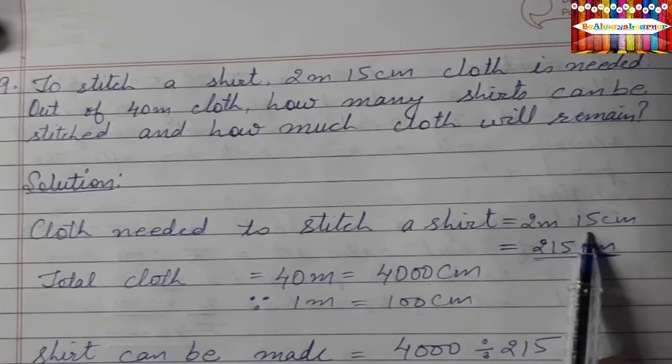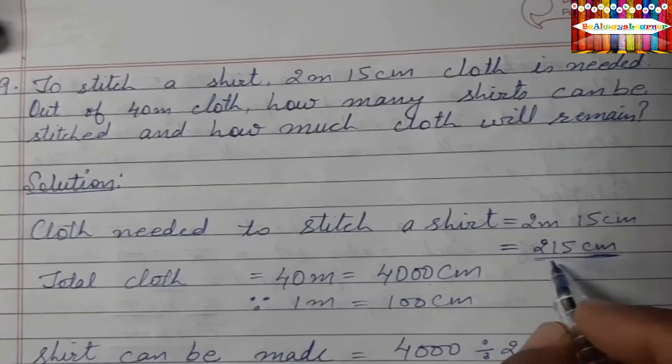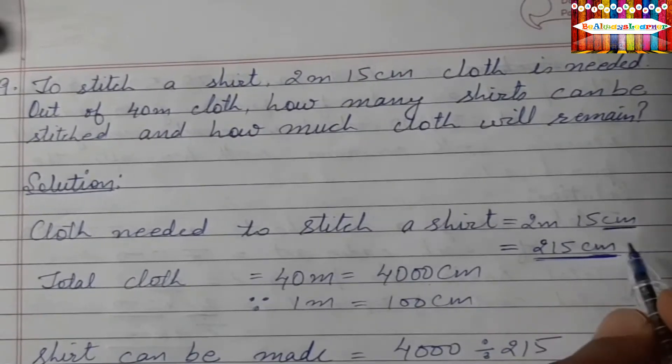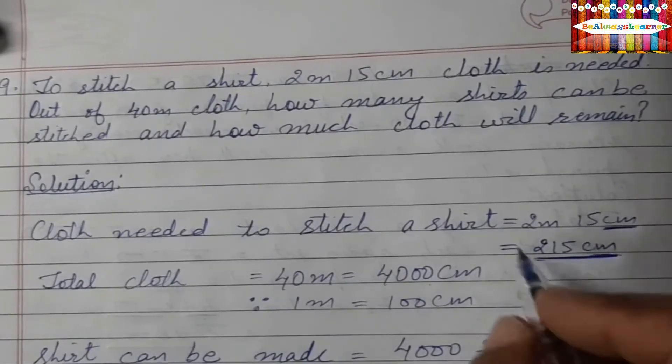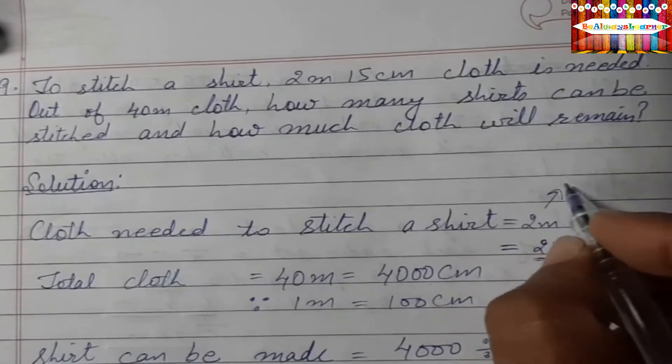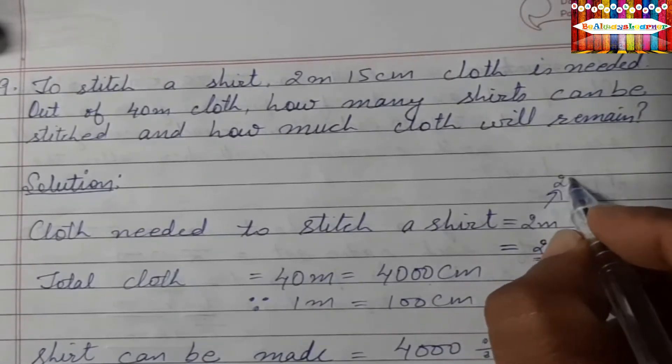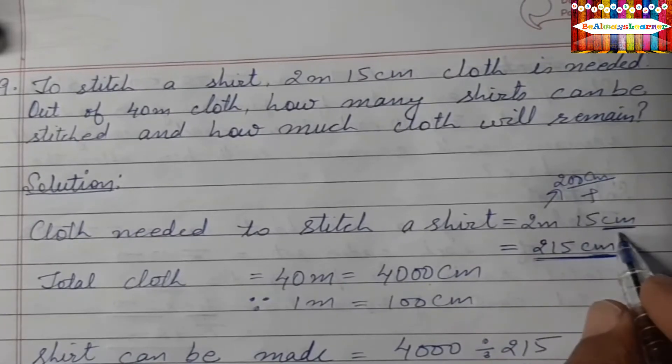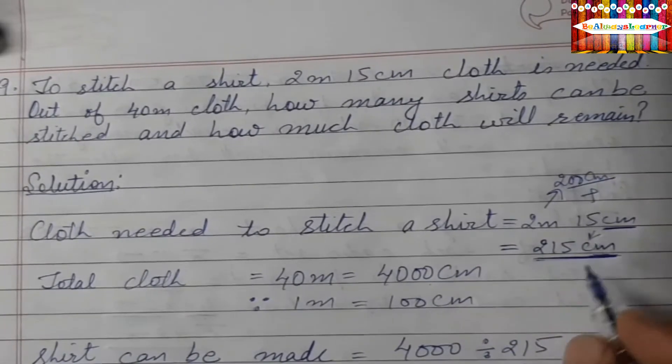We have converted it to cm because we have small units given. We prefer to transfer data to small units. 2m is equal to 200cm, so we can add this 15cm into this and then we can get 215cm.